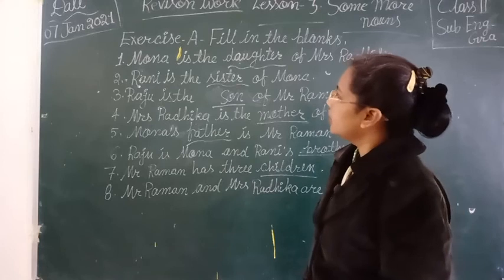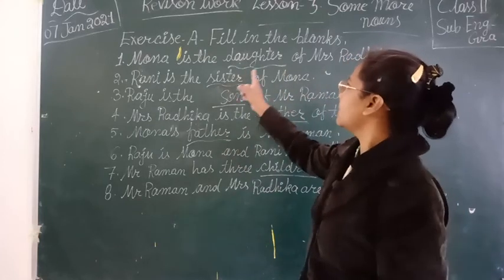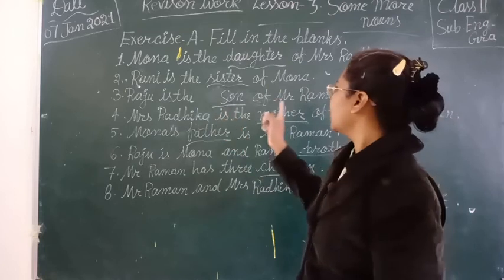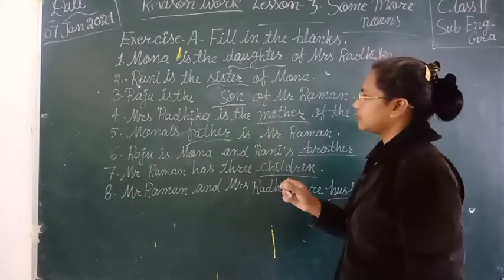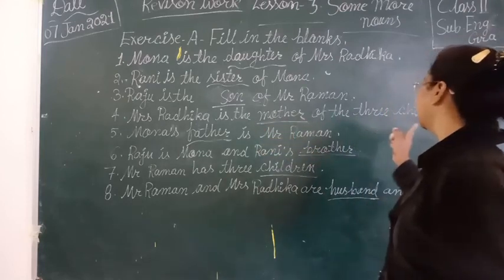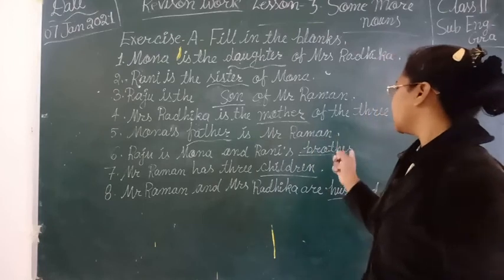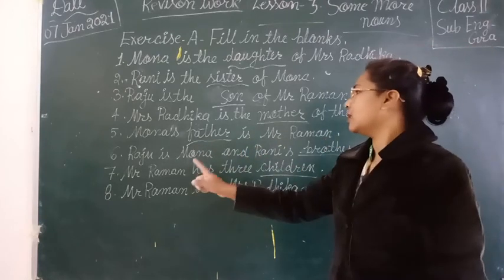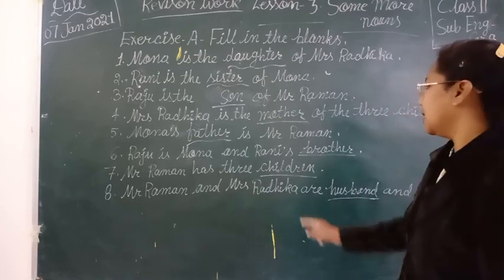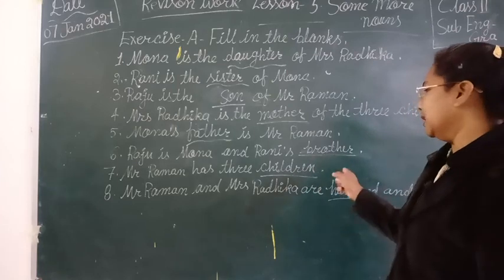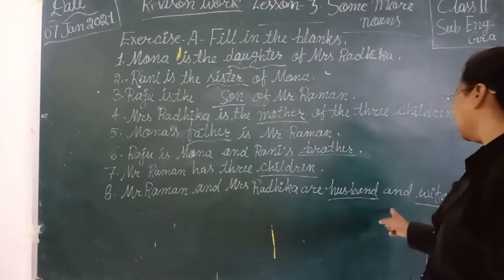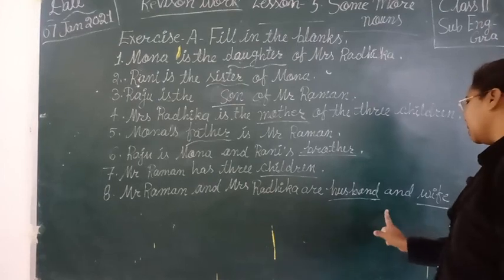Again I will repeat. Mona is the daughter of Mr. Radhika. Rani is the sister of Mona. Raju is the son of Mr. Raman. Mr. Radhika is the mother of the three children. Mona's father is Mr. Raman. Raju is Mona and Rani's brother. Mr. Raman has three children. Mr. Raman and Mr. Radhika are husband and wife.